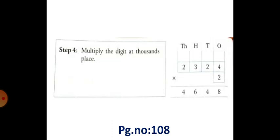Next, multiply the digit at thousands place. So the thousands place numbers are 2 into 2. 2 twos are 4. So 4 you have to write in thousands place. So the final answer is 4,648.